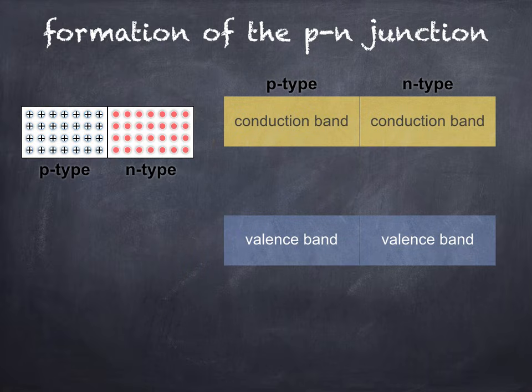The diagram on the left shows a semiconductor crystal which is doped so that one side, the left hand side, is P-type and the other, the right hand side, is N-type. Remember from the first video that the majority charge carriers in a P-type semiconductor are positive holes, and in an N-type semiconductor the majority charge carriers are negative electrons. Despite this, both are electrically neutral.